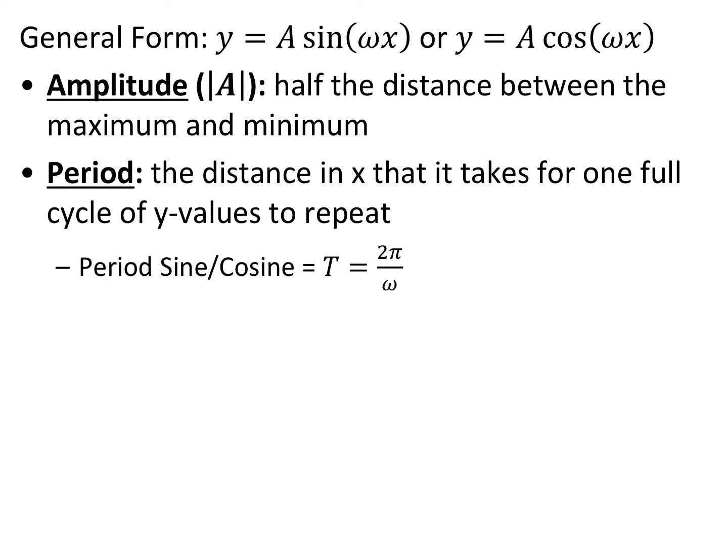For trig functions, we give some transformations specific names. If we look at y equals a sine of omega x, or y equals a cosine of omega x — where omega is the lowercase Greek letter — the vertical stretch or compression is called the amplitude, which is the absolute value of a. It's the distance from the equilibrium to either the max or the min. The period is the distance in x for one full cycle of y values to repeat. For untransformed sine or cosine that's 2 pi. The new period is T equals 2 pi divided by omega.